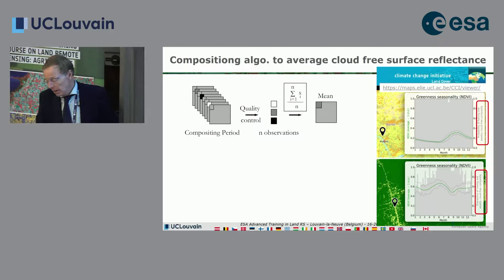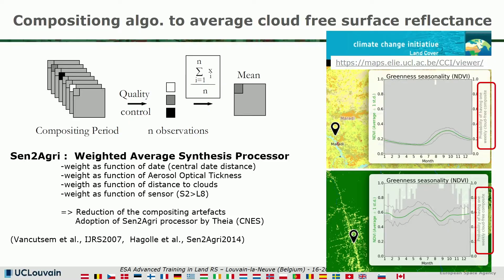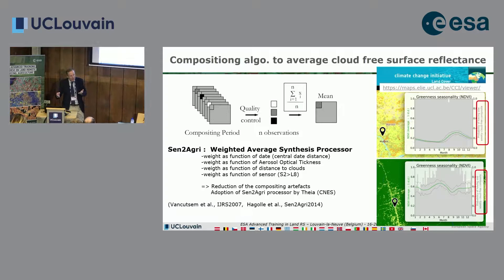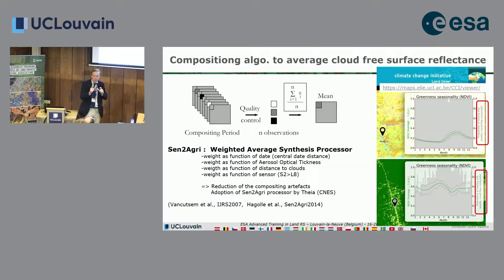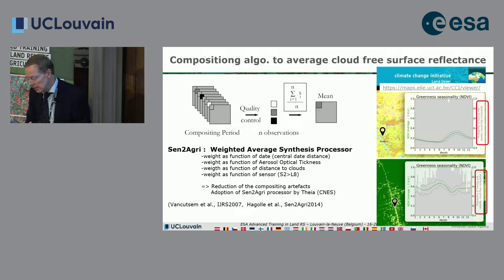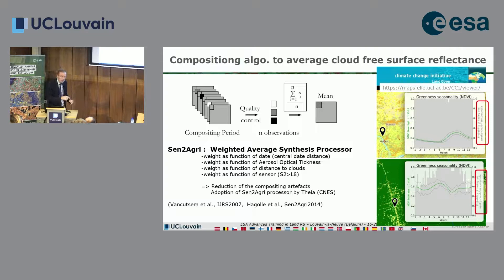In the Sen2Agri system, a more sophisticated approach is used: the Weighted Average Synthesis Processor. Pixels are weighted according to their temporal distance from the target date — for a mid-May composite, mid-May observations contribute more than those from May 1st or May 30th. Additional weights are based on aerosol optical thickness, distance to cloud (pixels near clouds are suspicious even if not flagged), and sensor type. This approach is also used by THEIA and other processing chains.